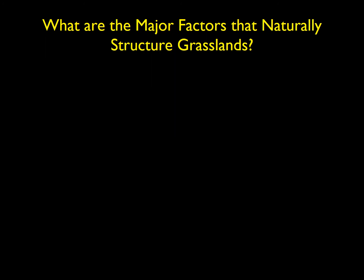Thinking about the major factors that naturally structure grasslands — the first is high fertility. The reason for that high fertility is the massive amount of below-ground root biomass. These plants have a very high root-to-shoot ratio, which leads to very high organic content, both in the exudate from the roots — chemicals released by the roots into the soil. Also, a lot of these areas are low in precipitation, so you don't have very high leaching of nutrients. These are very, very fertile areas, and of course this is part of the reason those areas have become agricultural for the most part.